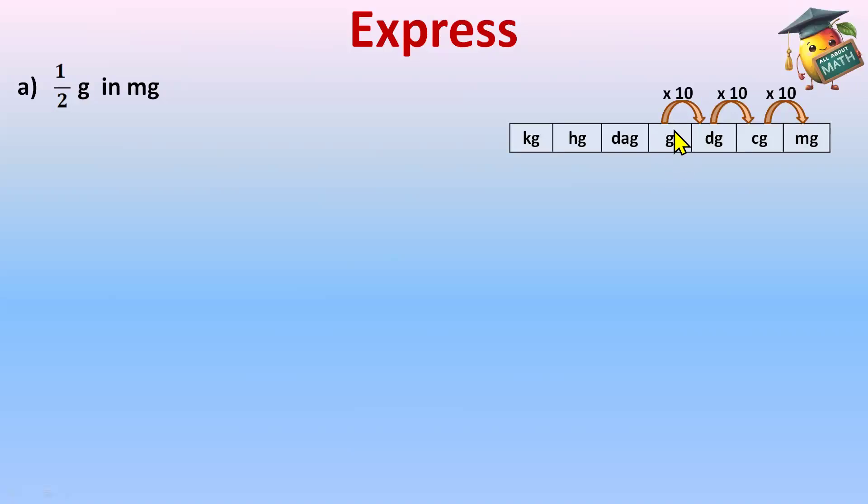It means 1 gram equals 1000 milligrams. So we need to multiply 1/2 with 1000. So 1/2 grams equals 1/2 multiply 1000 milligrams. Now, you will do the cutting. 2 and 1000. 2 ones are 2, 2 five hundreds are 1000. So 1 multiply 500 will be 500 milligrams.